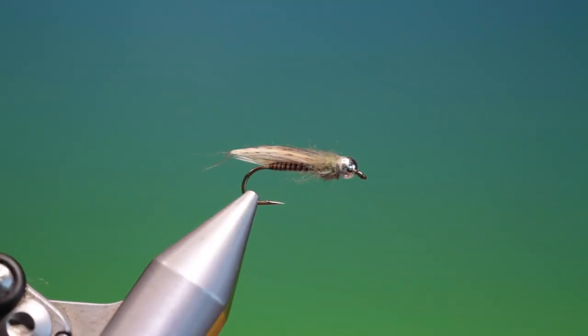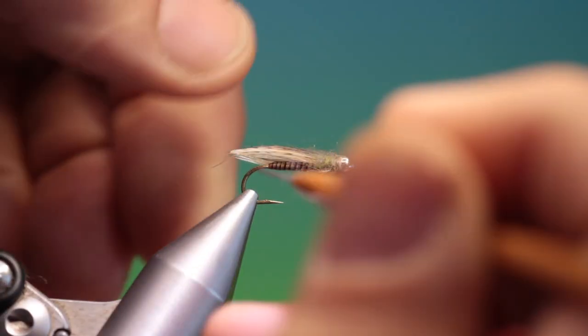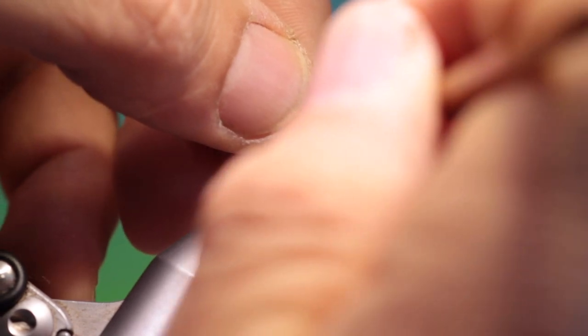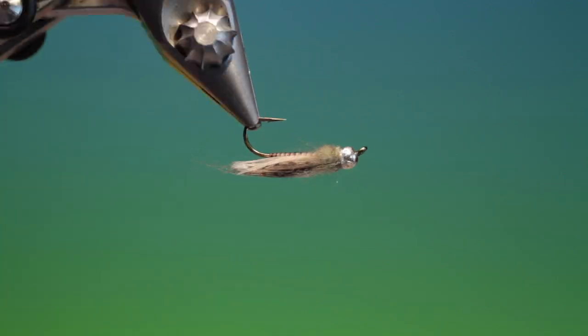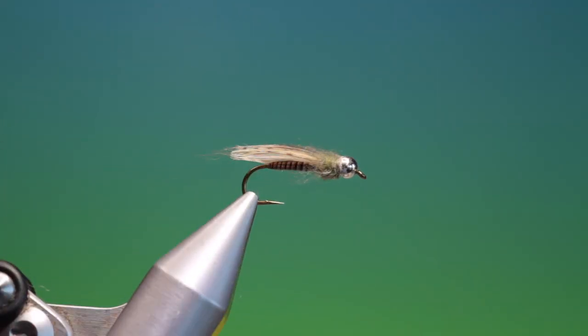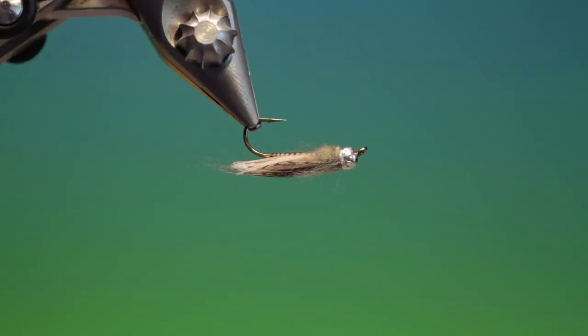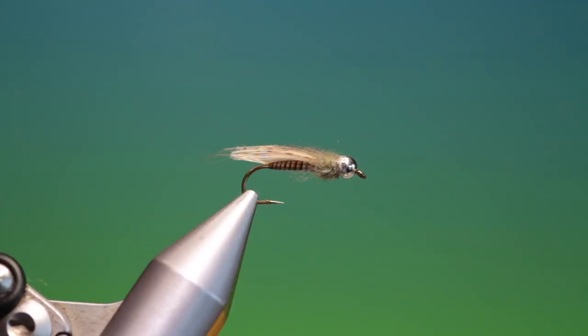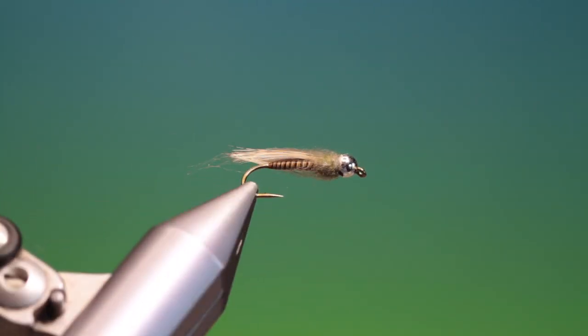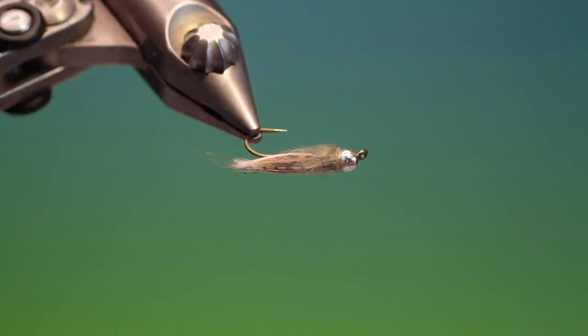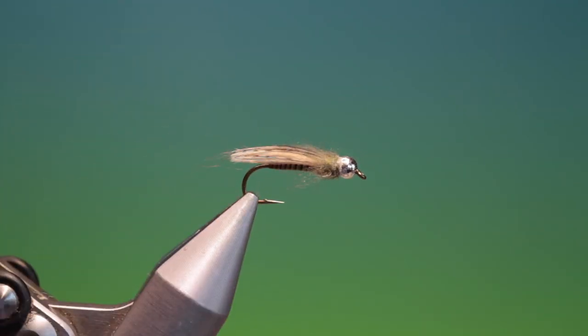And that's the finished diving beadhead caddis. You can lift the wing up a little bit more if you wish. But it works a real treat. Just pull it through the surface, just under the surface. As an egg laying caddis and it really is a nice pattern to fish. If you enjoy the videos please like, share, subscribe and thanks for watching. We'll see you next time.